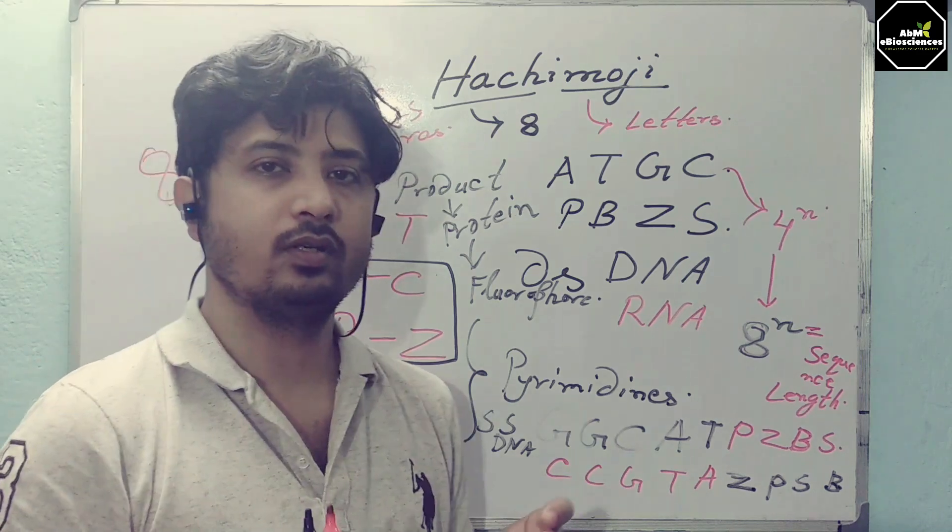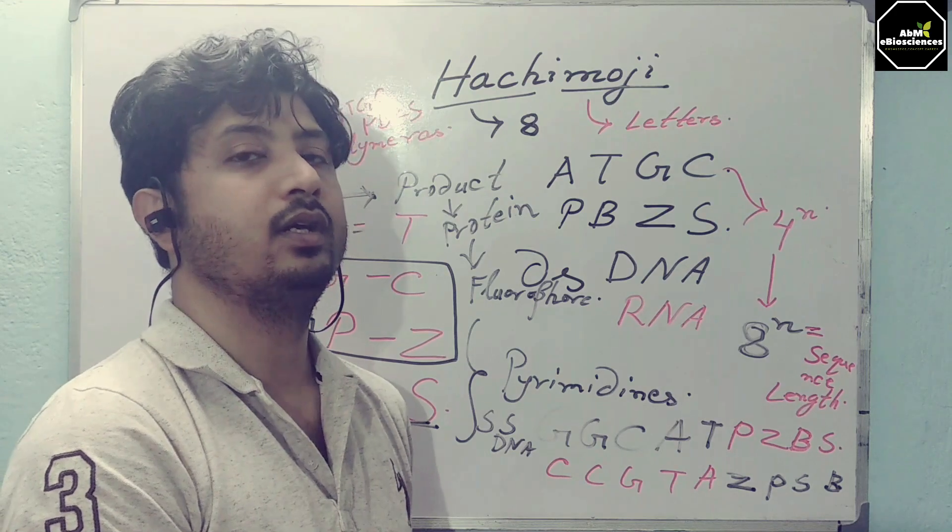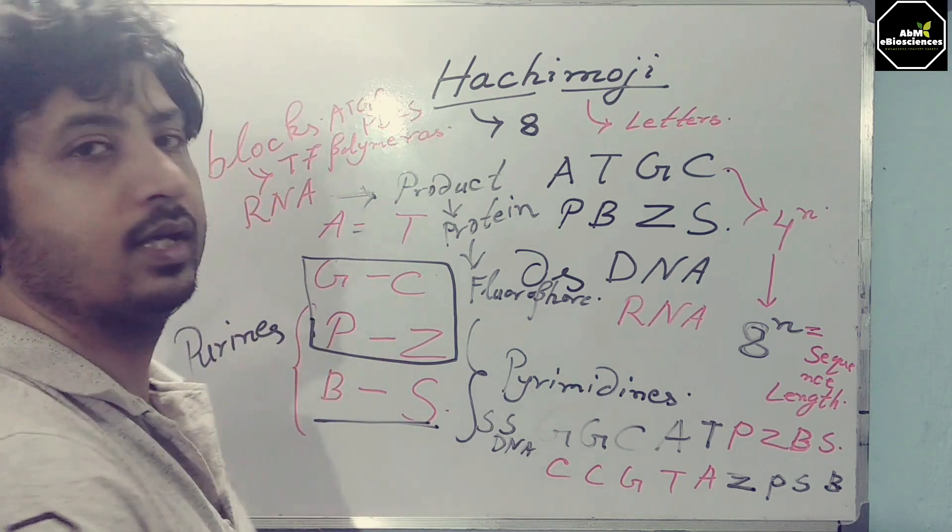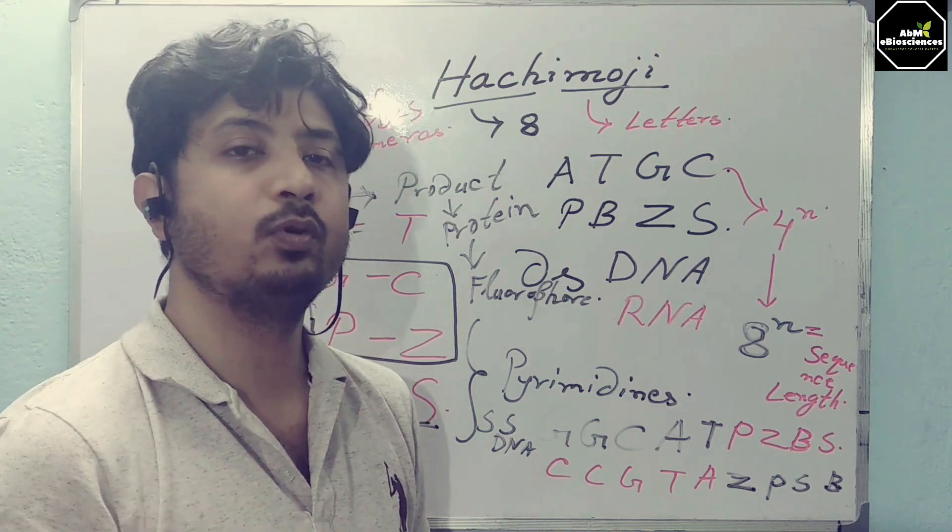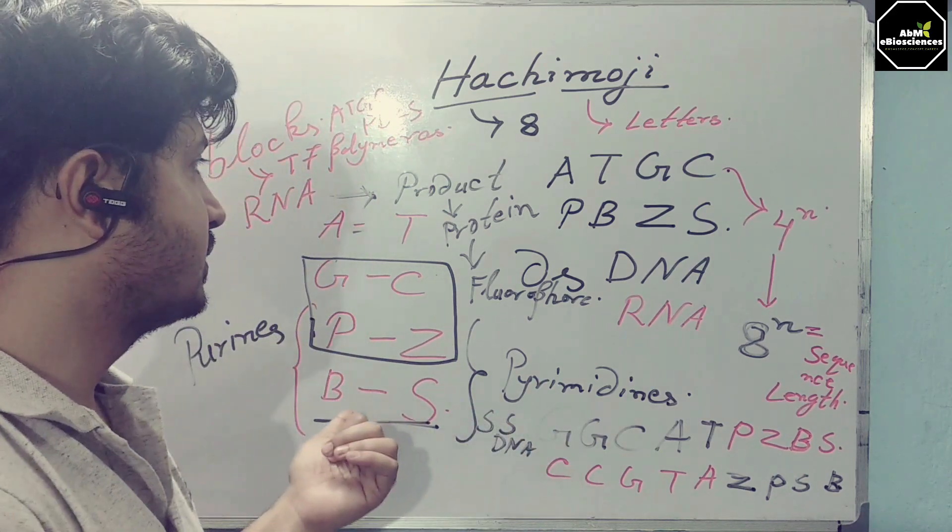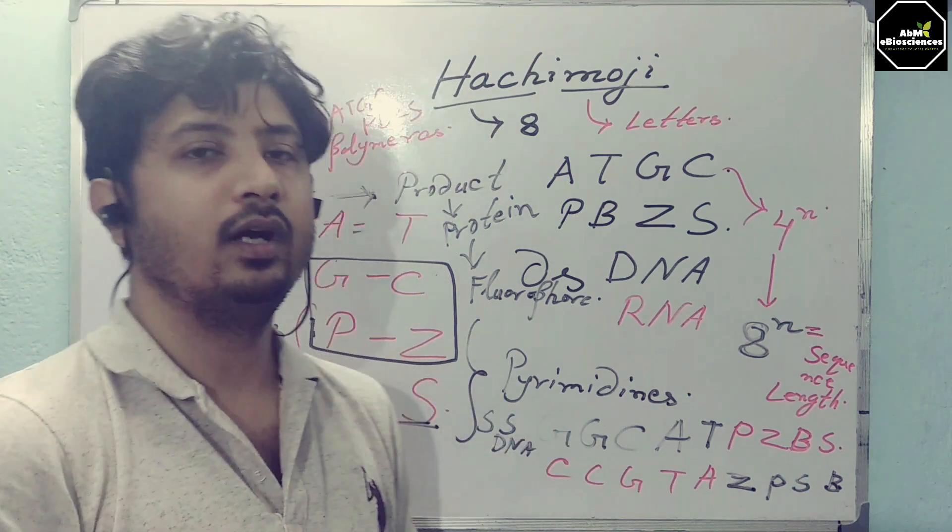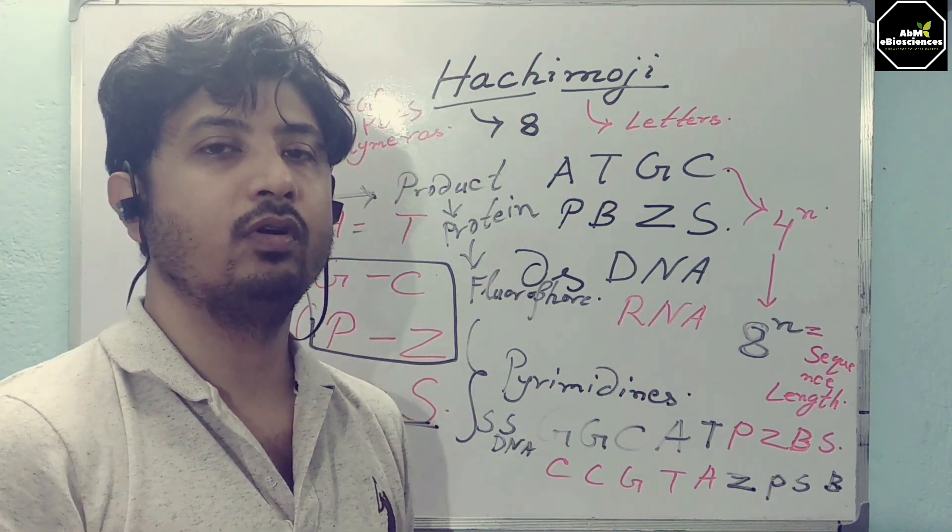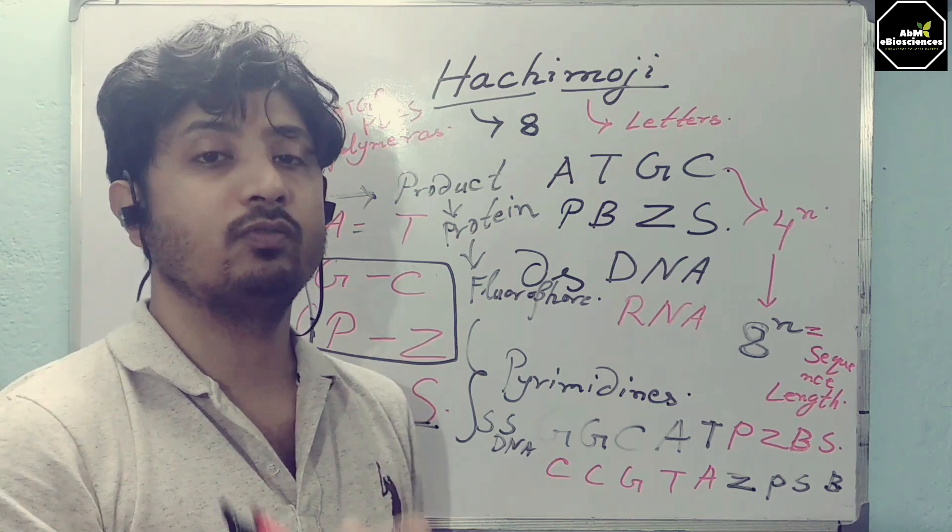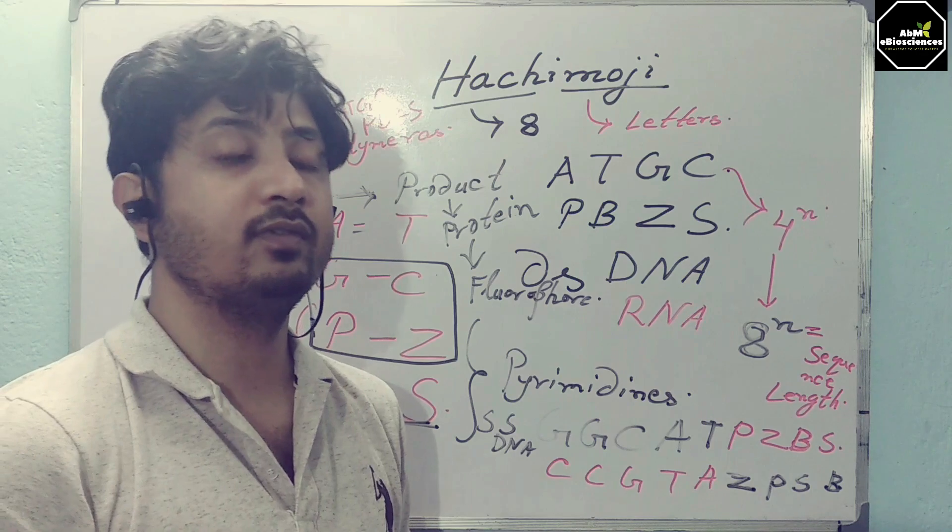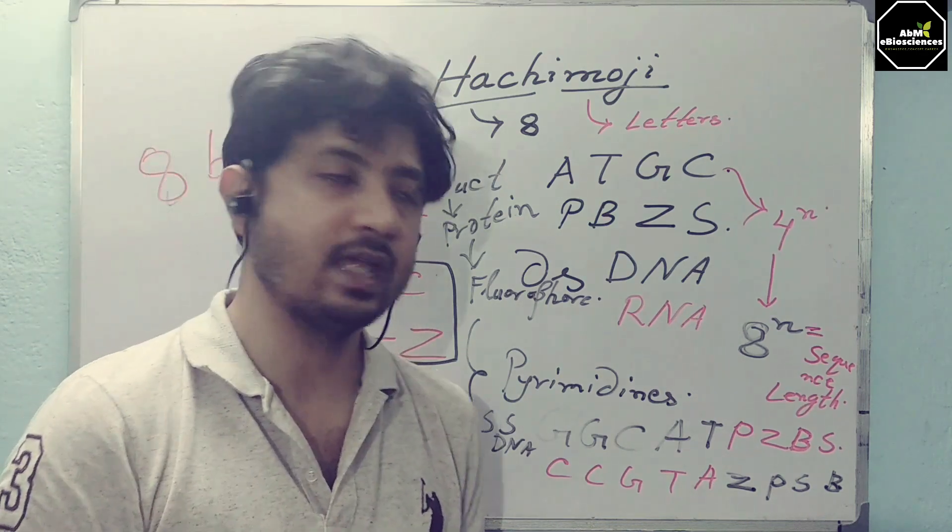They have shown that not only these extra bases can be transcribed by RNA polymerase to RNA, but that can be given functionality as a protein in the form of fluorophore. This is an interesting study in my opinion, and it will go for genetic bar coding, genetic composition. The chances of evolution are much higher if you consider this extra sequence length or extra blocks.